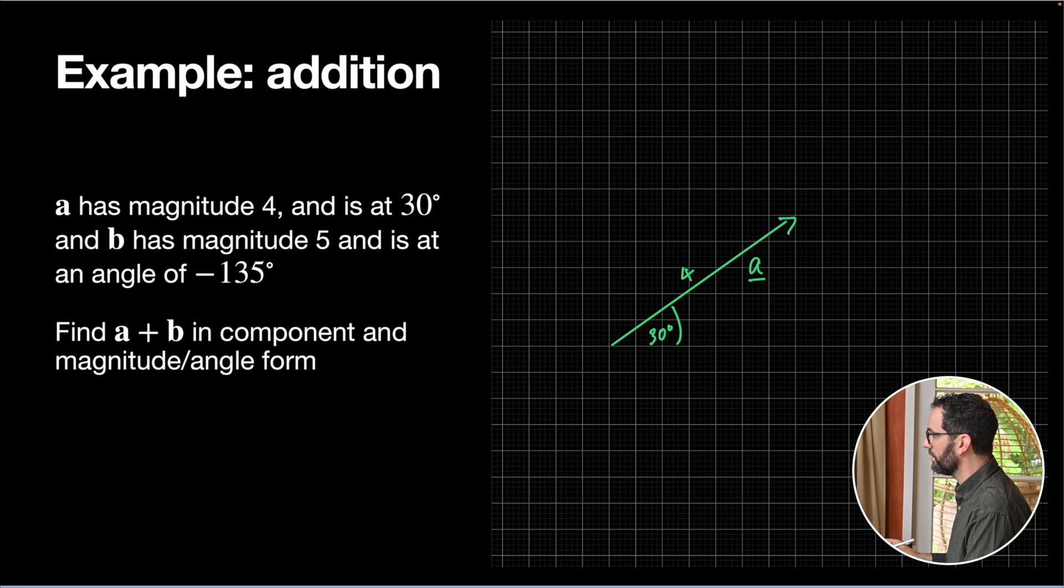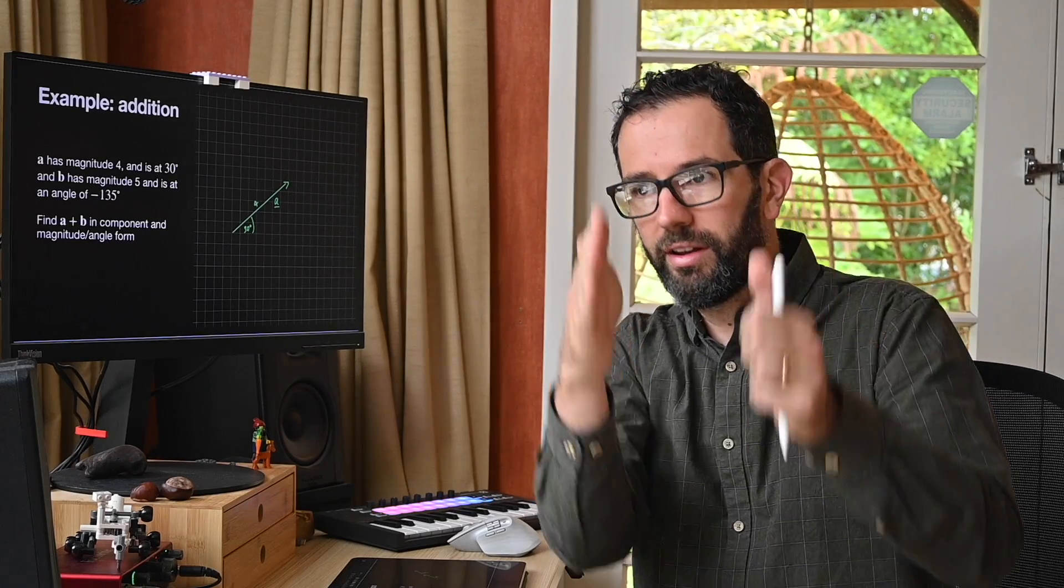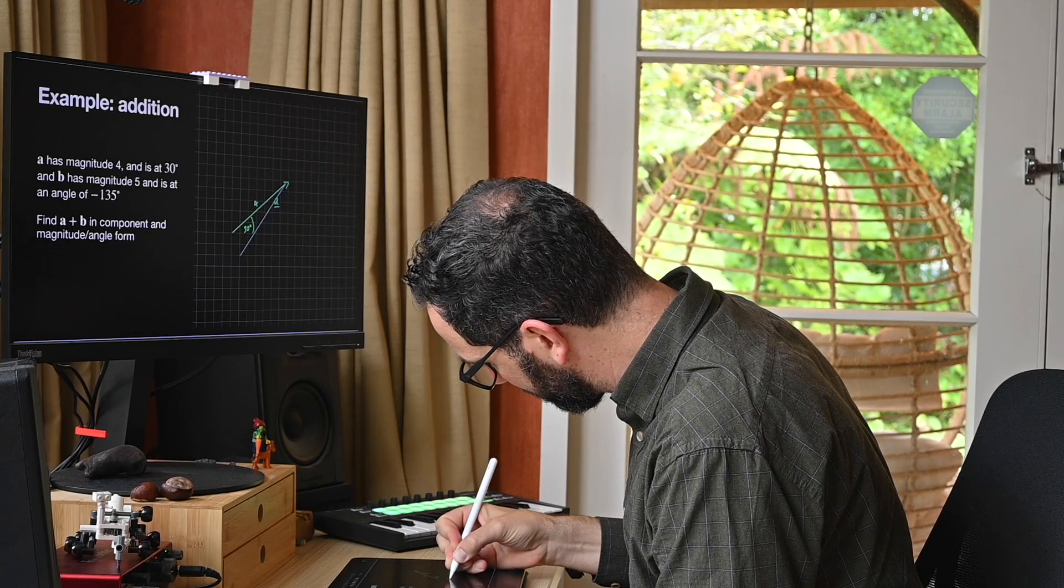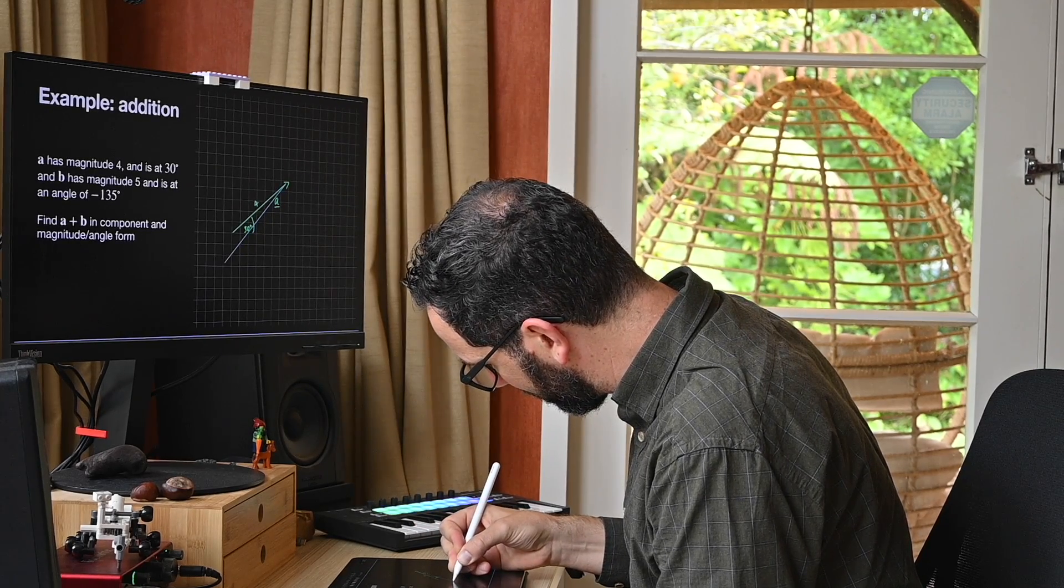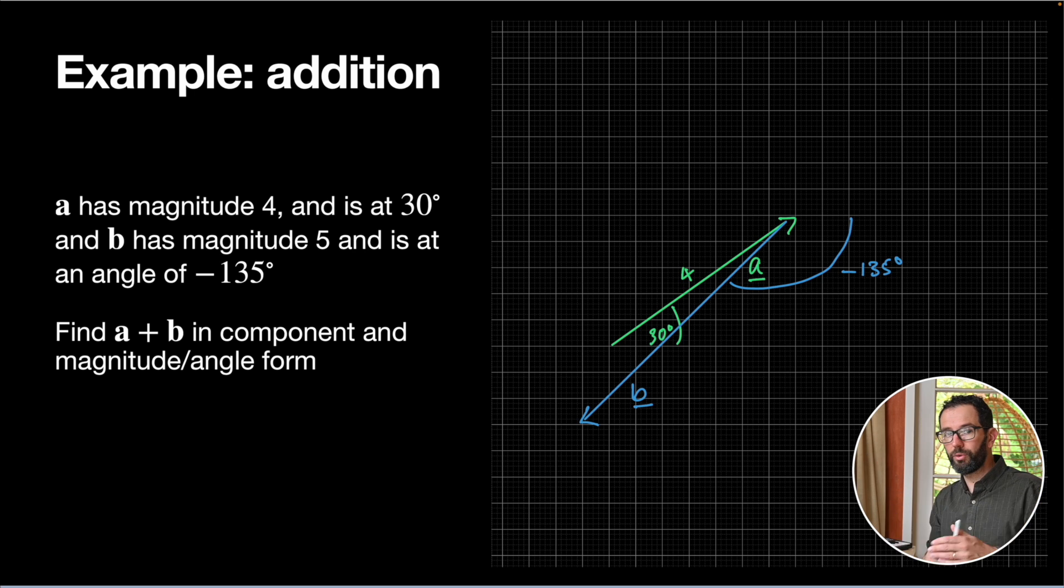And vector B has a magnitude of 5 and is at an angle of negative 135 degrees. That's a bit awkward. So, magnitude of 5, so it's going to be a bit longer than that one. Negative 135 degrees, while negative 90 is straight down, going a further 45 around. So my B is going to look something like this. 45 degrees, kind of that way. And it's going to be a bit longer. Bit awkward, but hey, that's where the negative 135 degrees goes. So remember, negative angles are clockwise from the positive x direction. And we know that B has a magnitude of 5, and we want to add these two things together.